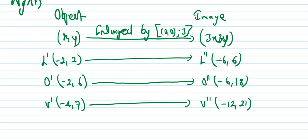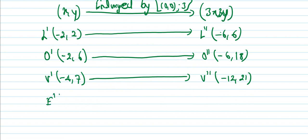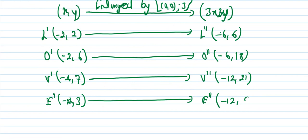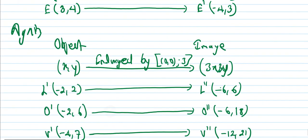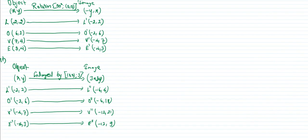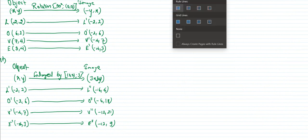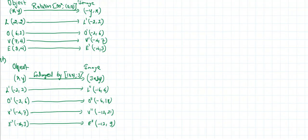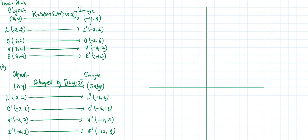E dash = minus 4, 3, so E double dash = minus 12, 9. So I have all the image coordinates. The final image coordinates after both transformations have been found.